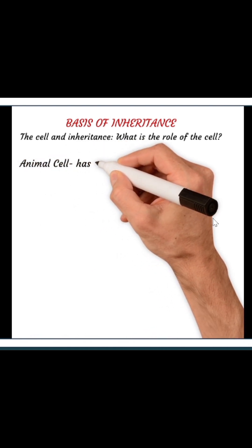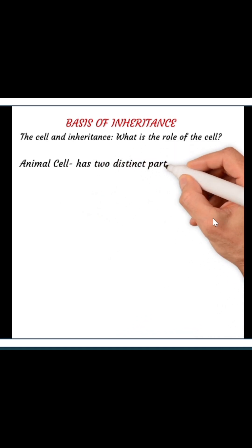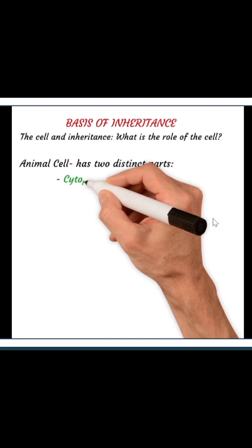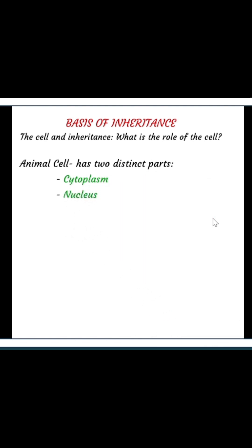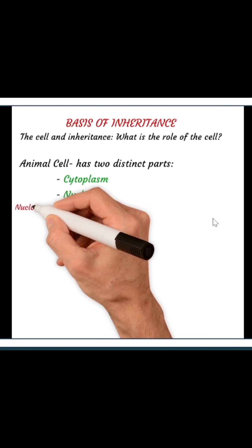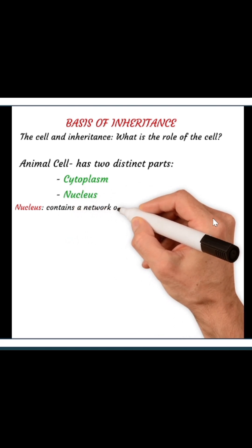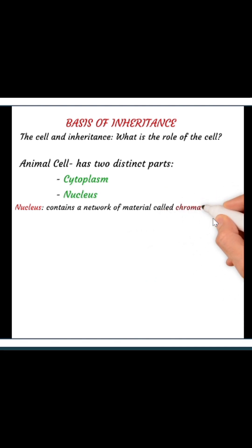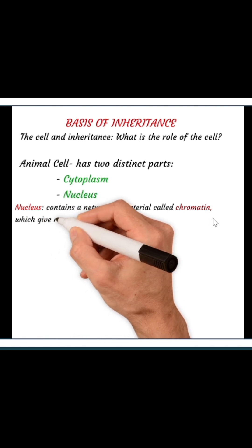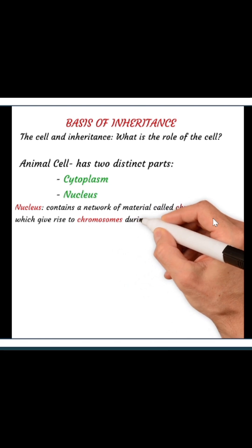Let's have a look at the animal cell. The animal cell has two distinct parts, which includes the cytoplasm and the nucleus. The cytoplasm constitutes the major part of the cell, while the nucleus is just a small portion of the cell. Right inside the nucleus, we have a network of material that we call chromatin. The chromatin gives rise to the chromosomes during the time of cell division.